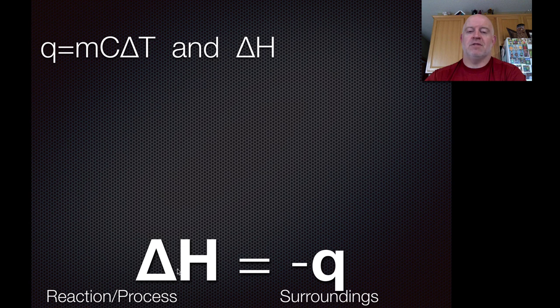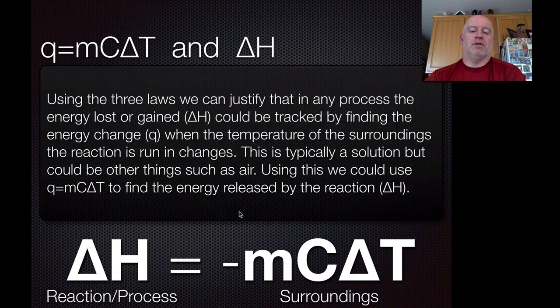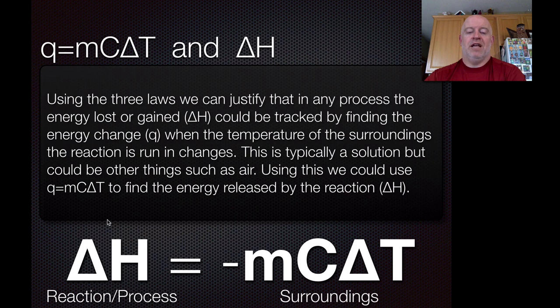The surroundings we can track. We can't track the bonds themselves, but we can track the surroundings. How does it warm up or cool down the solution it's in? So we can set these two equal to each other where the delta H of the enthalpy change equals the opposite of the q value. We typically set the delta H equal to the opposite of what happens to the surroundings.